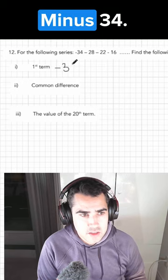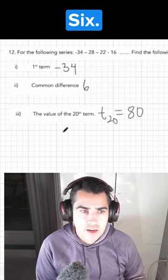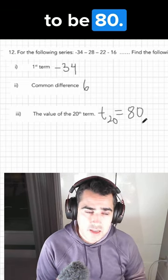This is the answer: minus 34, 6, and the value of the 20th term is going to be 80.